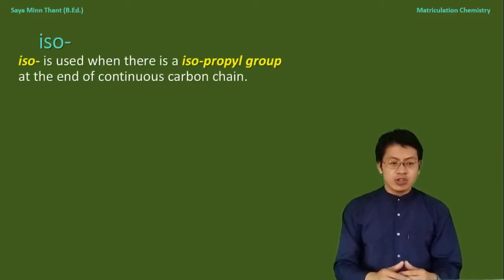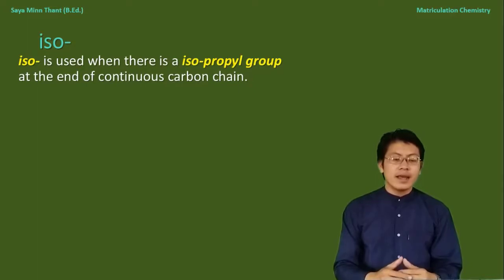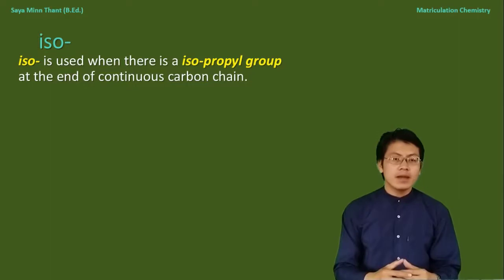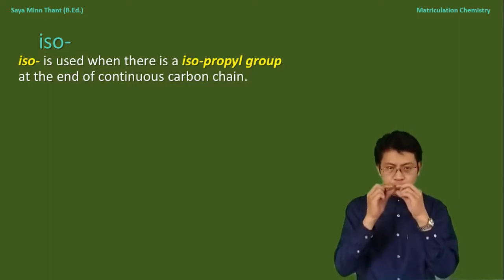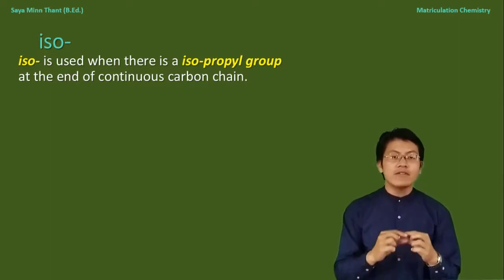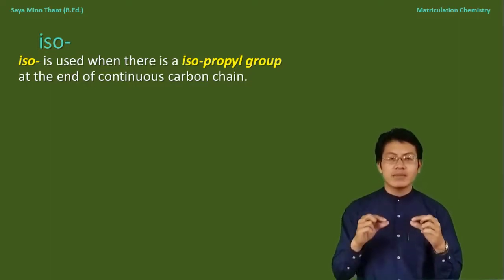The prefix 'iso' is used when there is an isopropyl group — an isopropyl group attached at the end of a continuous carbon chain.